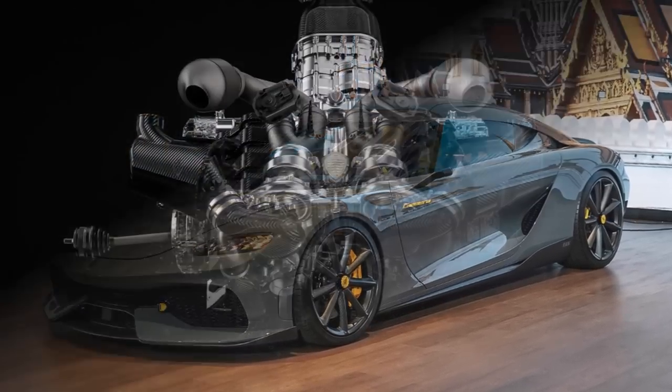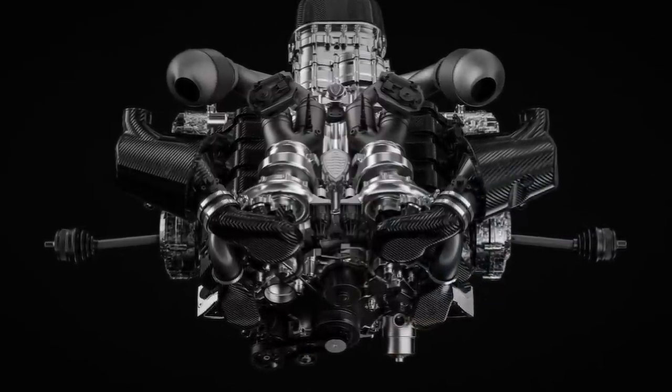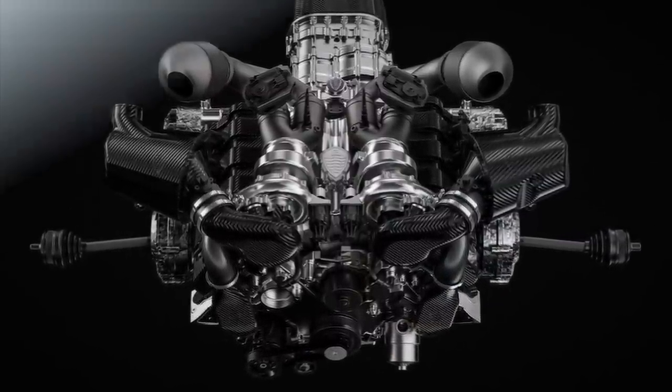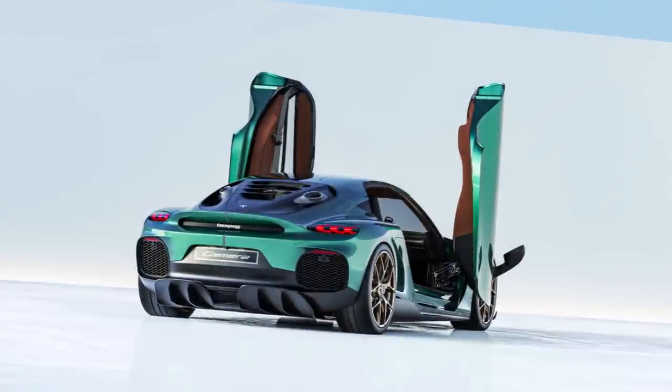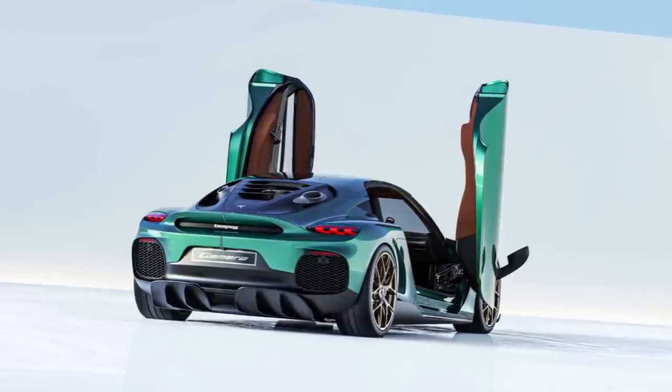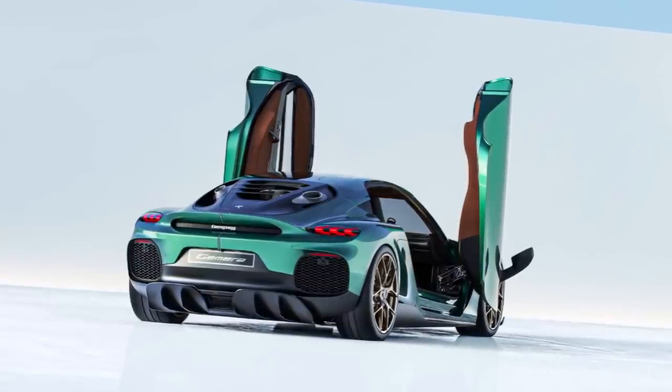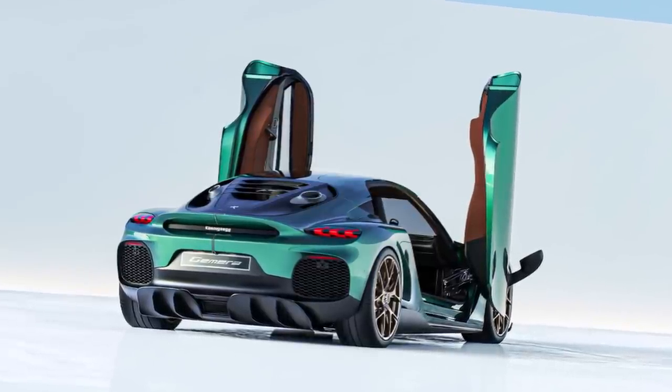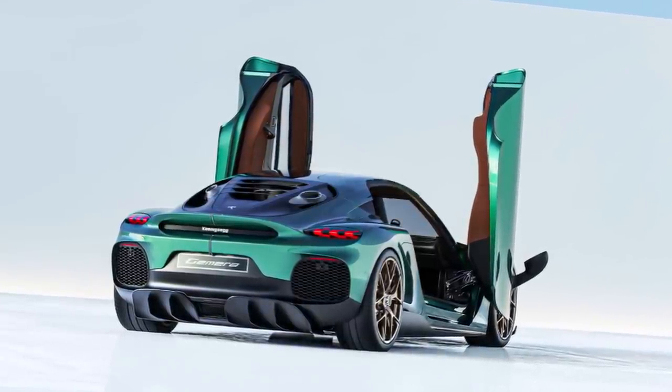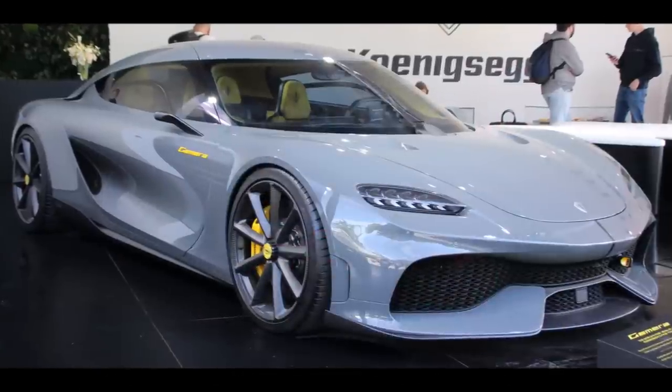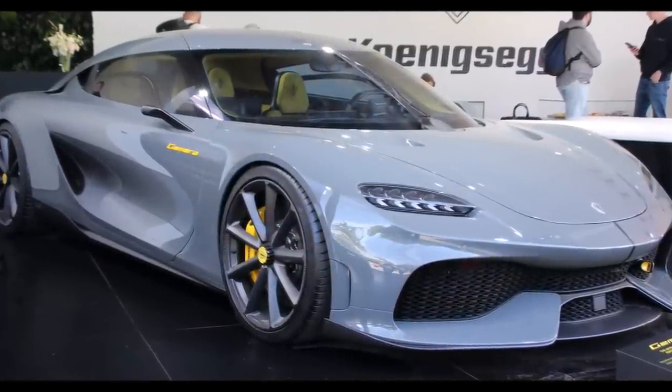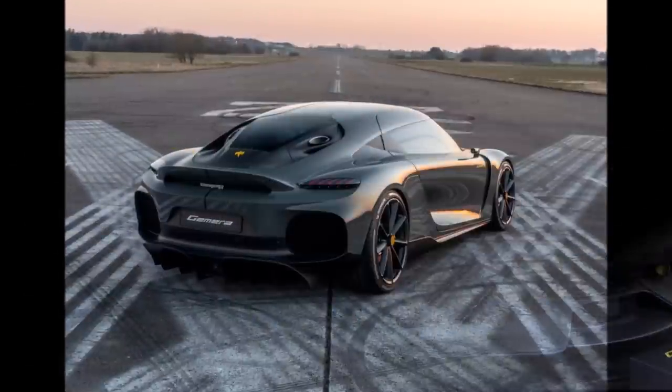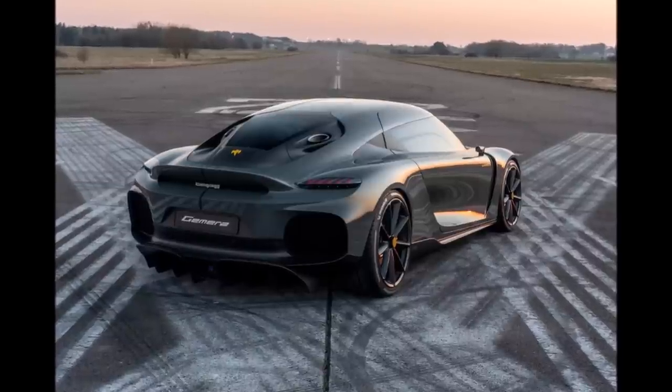The next step was that Koenigsegg tried to fit the V8 Jesko engine in the existing Gemera car. That didn't work at the beginning because the exhaust primaries clashed with the gearboxes at the side. Koenigsegg then turned the cylinder heads to have the hot exhaust in the V and the more compact intakes at the side. In terms of length, the V8 is not much longer than a three cylinder engine. So they could make it work and even without changing the exterior.